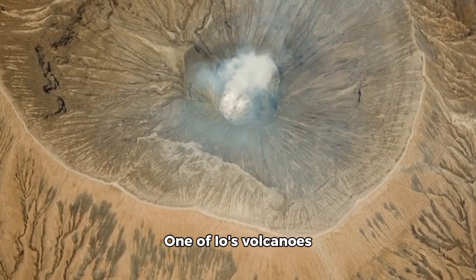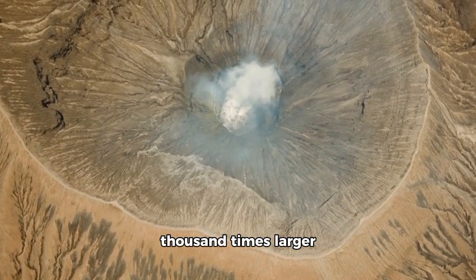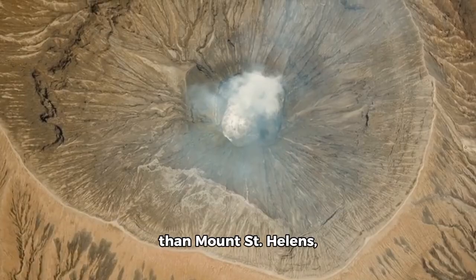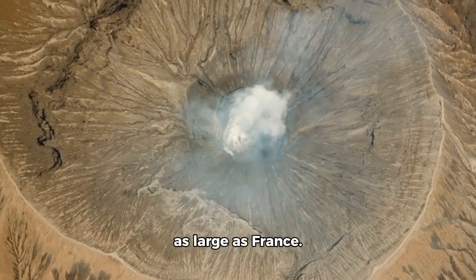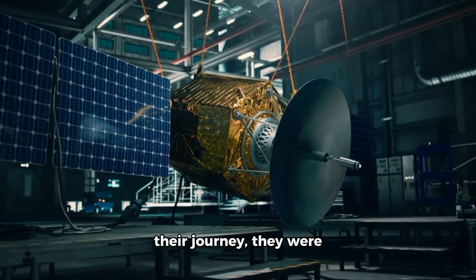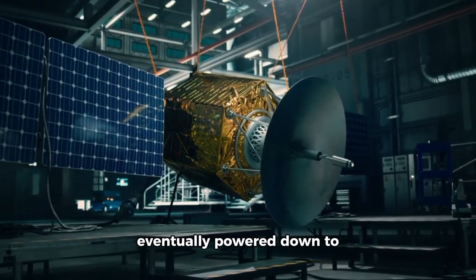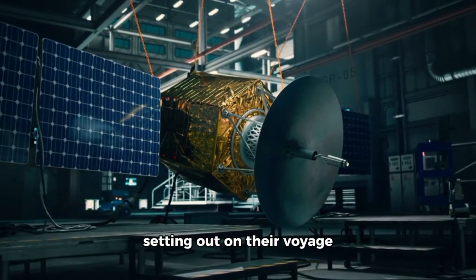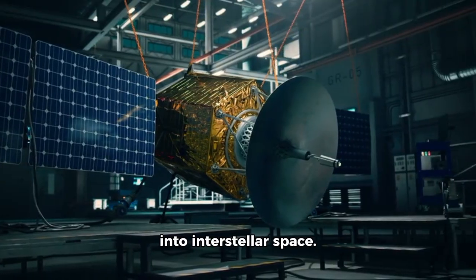One of Io's volcanoes erupted with a force 1,000 times larger than Mount St. Helens, covering an area nearly as large as France. As the spacecraft continued their journey, they were eventually powered down to conserve energy before setting out on their voyage into interstellar space.